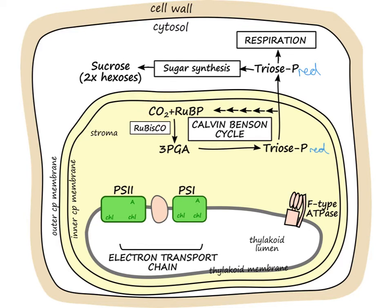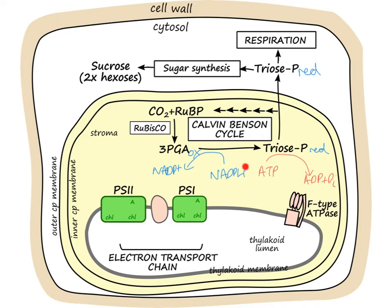In the Calvin-Benson cycle, we take CO2 — inorganic carbon dioxide — plus RuBP, which is a 5-carbon molecule, and we first make a molecule called 3-phosphoglycerate, or 3-PGA. However, that molecule is an oxidised molecule — it's not energy-rich yet. To make it more energy-rich, we need one of these reducing agents, which is the molecule NADPH. So in order to go from 3-PGA to triose phosphate, we need to use up some NADPH and convert it back to NADP+, the oxidised form. We also need some ATP — we hydrolyse ATP back to ADP plus phosphate. So for this stage to work, we need both NADPH and ATP.